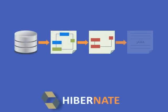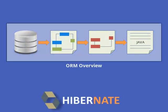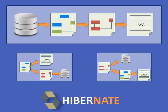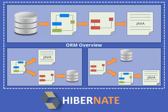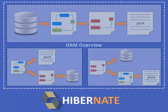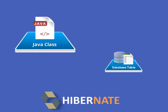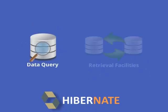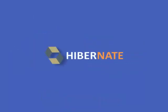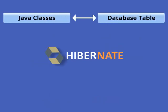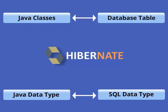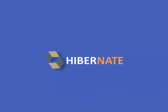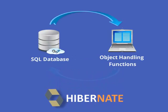Hibernate is an object-relational mapping or ORM library for the Java language. It provides a framework for mapping an object-oriented domain model to a traditional relational database. Hibernate not only takes care of the mapping from Java classes to database tables, but also provides data query and retrieval facilities. It maps Java classes to database tables and Java data types to SQL data types, and solves object-relational impedance mismatch problems by replacing direct persistence-related database accesses with high-level object handling functions.